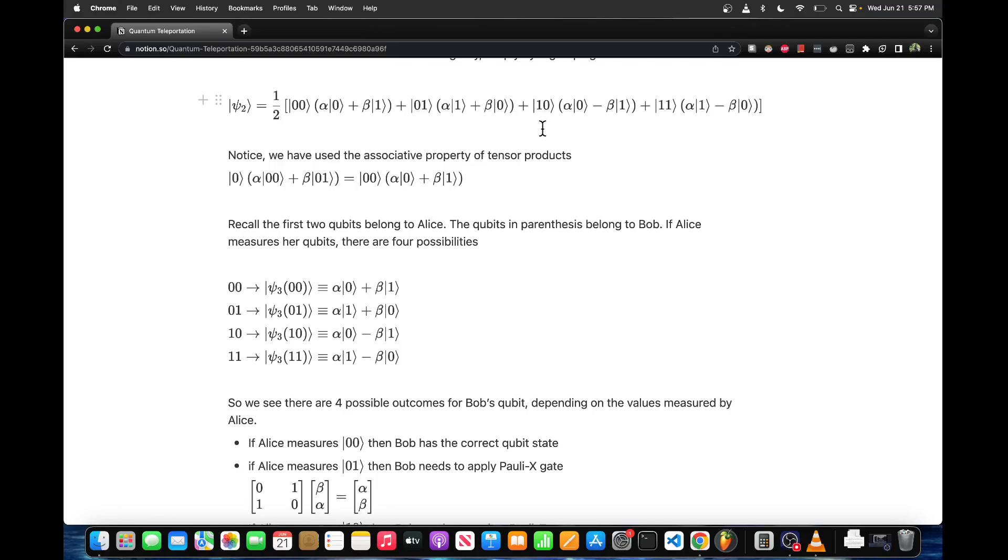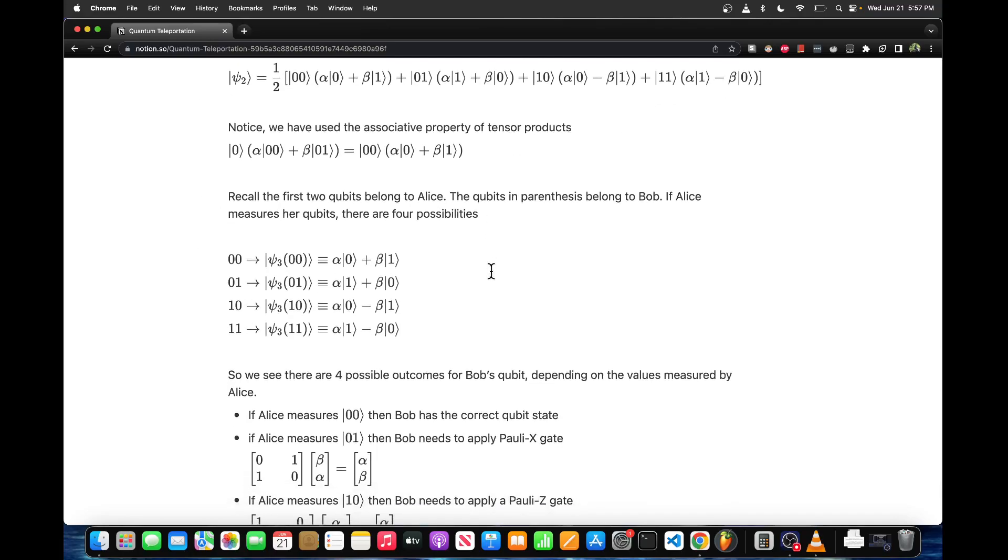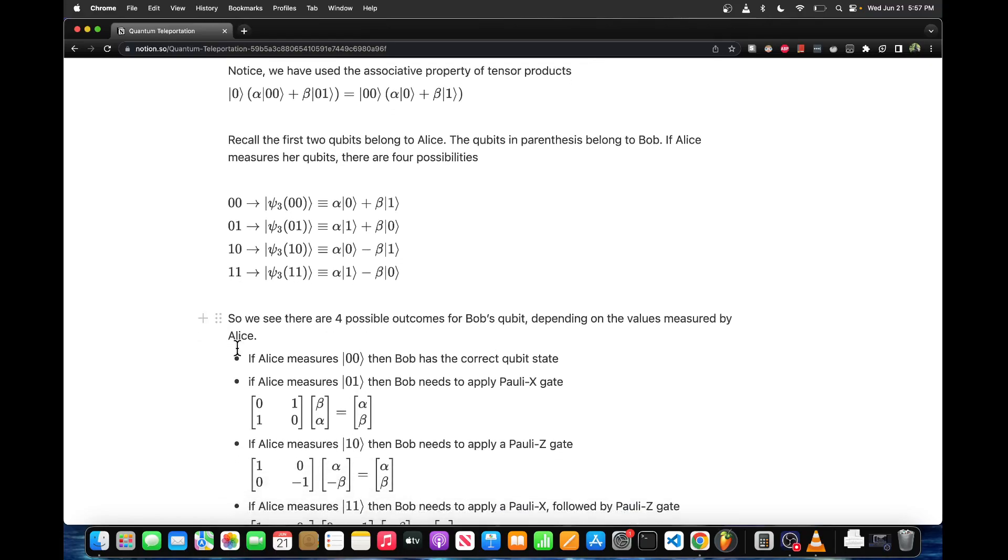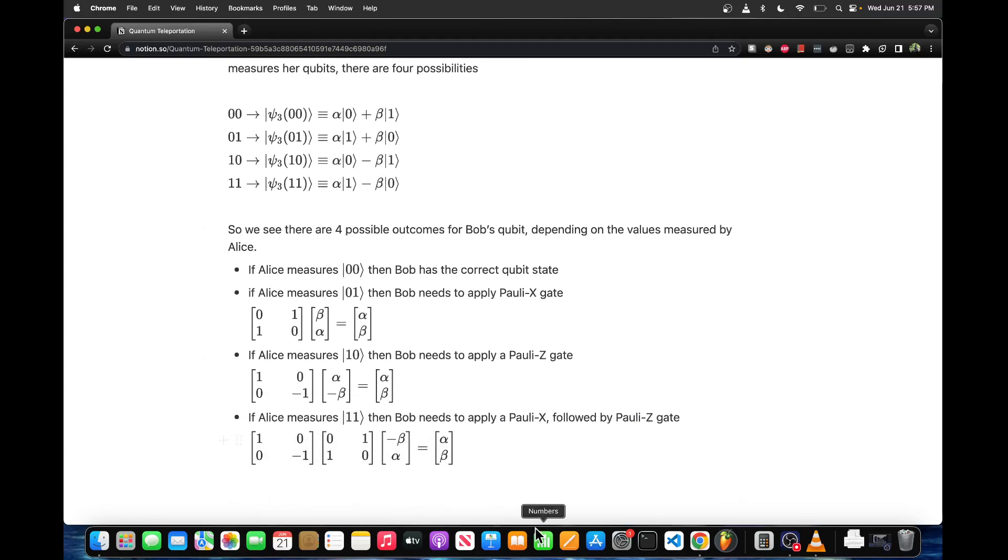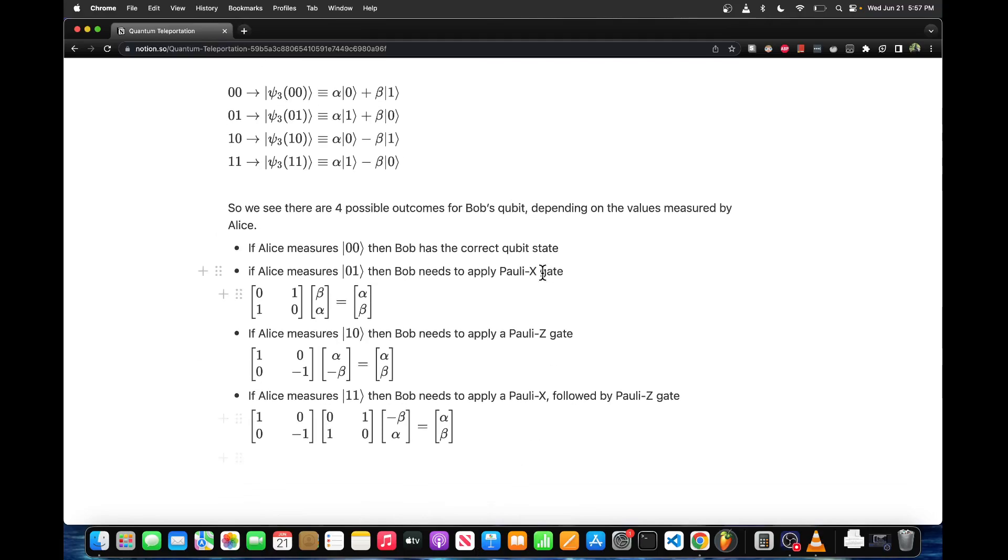If Alice measures 1,1 then Bob needs to apply both a Pauli X rotation followed by a Pauli Z rotation. So basically based on Alice's measurements, we need to relay that information to Bob so that he knows the correct post operations to apply on q2 to get the desired wave function.